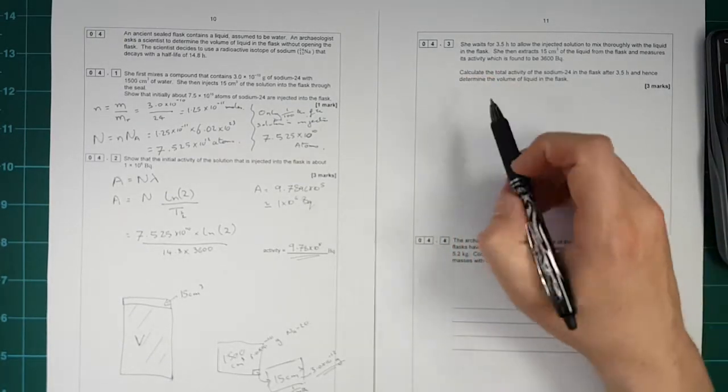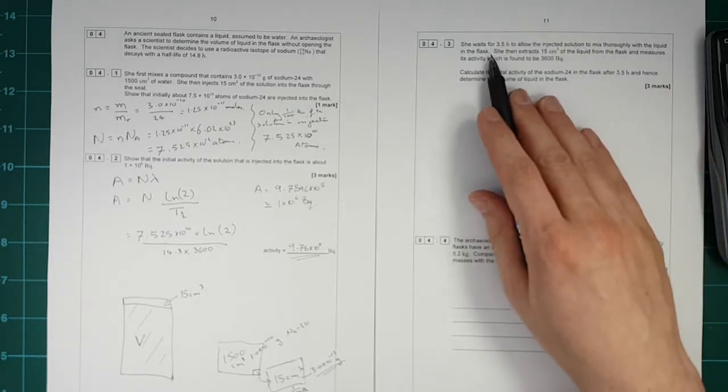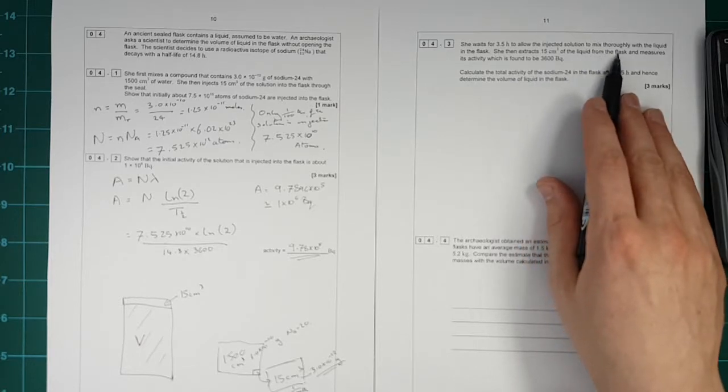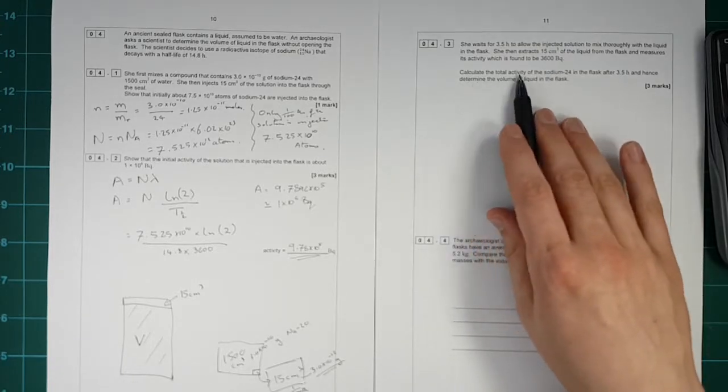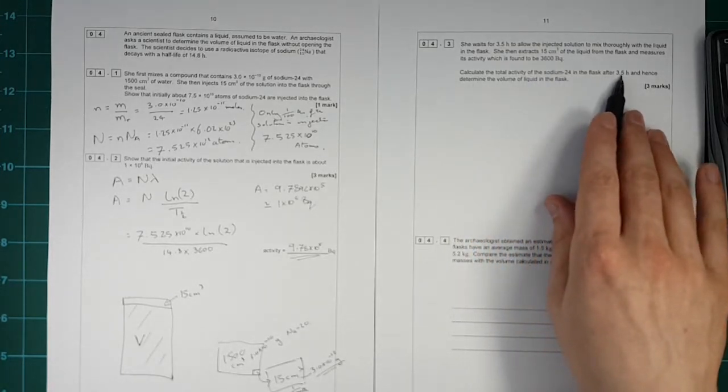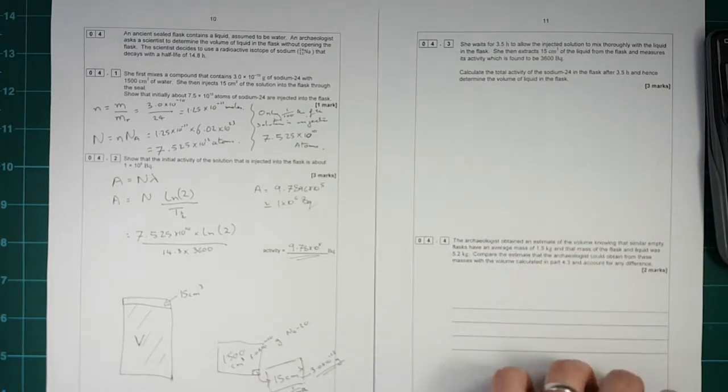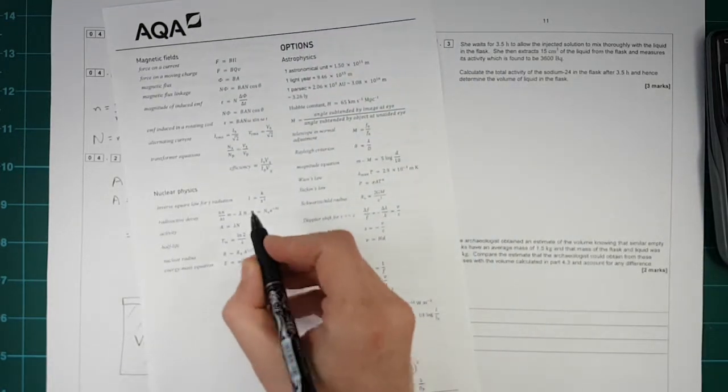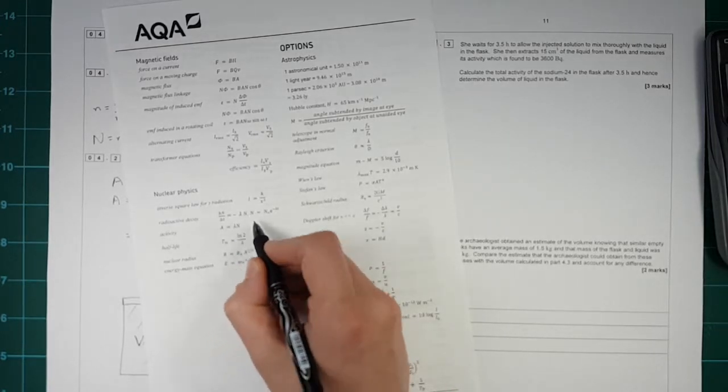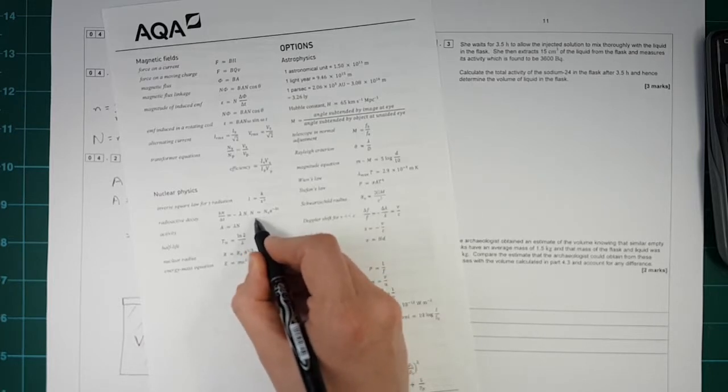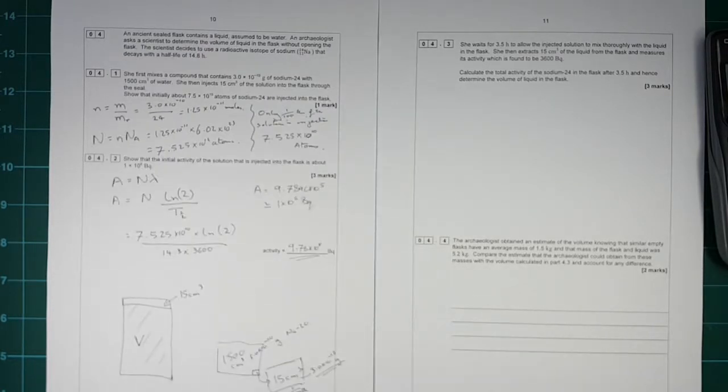For part 3, I think this is the one that people find the hardest. She waits for 3 and a half hours to allow the injected solution to mix thoroughly with the liquid, then extracts 15 centimetres cubed from the flask and measures the activity, which is found to be 3,600 becquerel. Calculate the total activity of the sodium in the flask after 3 and a half hours, and hence determine the volume of the liquid in the flask. Let's do this bit first. Calculate the total activity. So this is our formula sheet. We're going to be using this equation here, but we're going to be using the activity form of it rather than the number of nuclei form, which is this one. So you just put a's instead of the n's. Lambdas will cancel when you make that substitution.